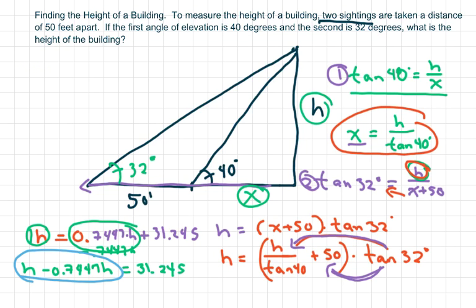0.2553H equals 31.245. Then you're going to divide both sides by 0.2553.